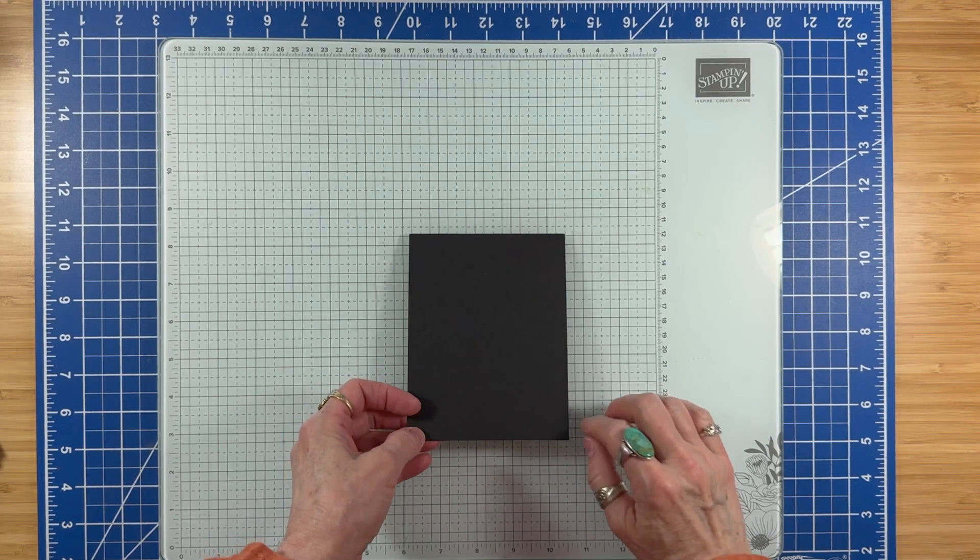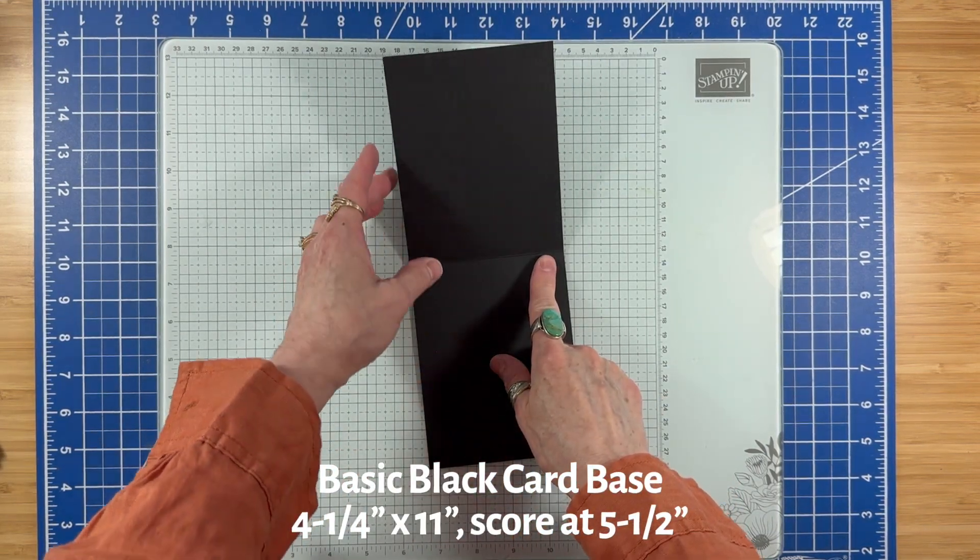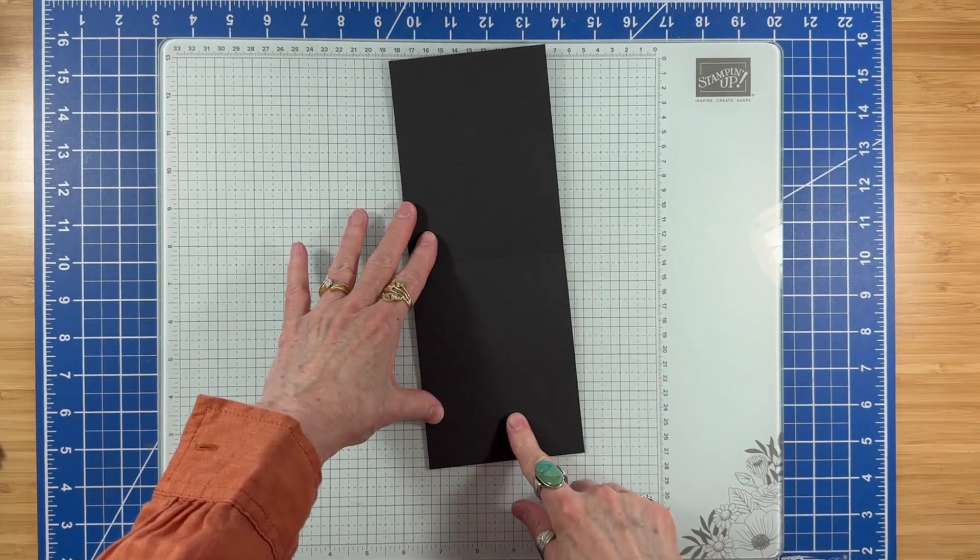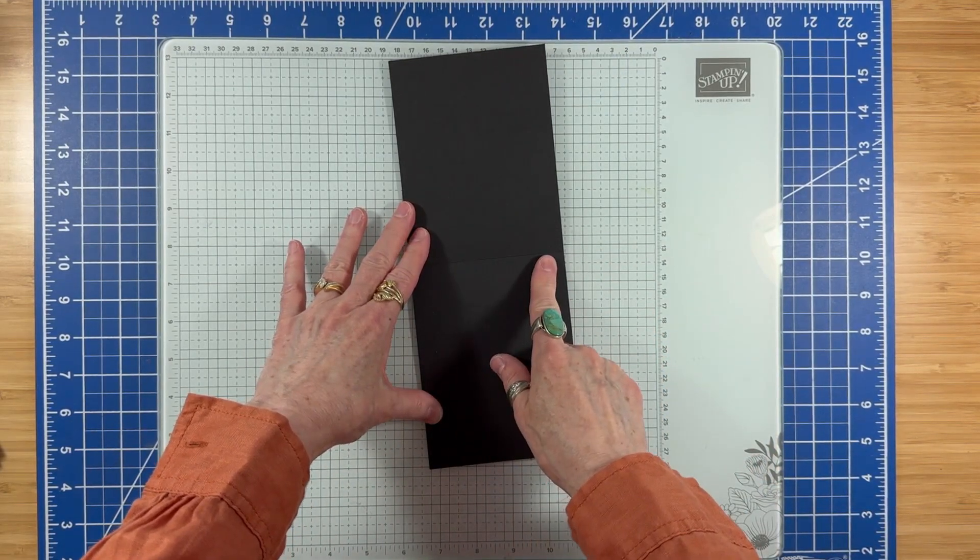I'm starting with a card base of basic black measuring 4.25 inches by 11 inches, and it's scored in the middle at 5.5 inches.